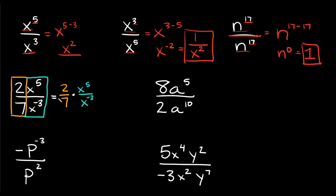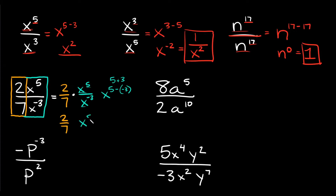So first of all, with the 2 over 7, we can't reduce that anymore, so this is just going to stay as 2 over 7. But this other part — x to the 5th over x to the negative 3 — we can simplify this the same way we simplified the examples above. We have an x here and an x here, so just keep the x and then subtract the exponents, with the one on top going first. So 5 minus negative 3 — that's the same thing as 5 plus 3, and 5 plus 3 is 8. So here we're going to have x to the 8th power. So this little fraction right here is going to reduce to x to the 8th power.